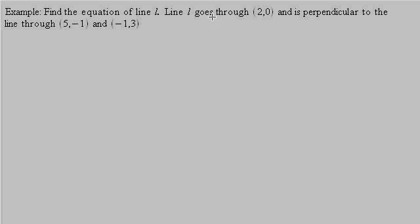Let's look at another one. Find the equation of line L. Line L goes through the point 2, 0, and is perpendicular to the line through 5, negative 1, and negative 1, 3. So we have a point on our line, but it doesn't give us the slope. It tells us that our line is perpendicular to the line that passes through these two points, so if we can find the slope of that line, the slope of our line would be the negative reciprocal.